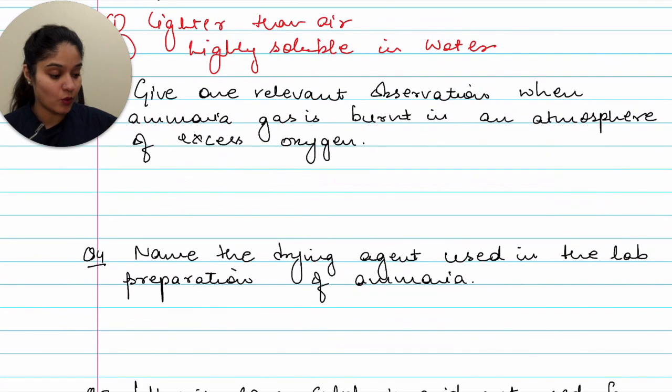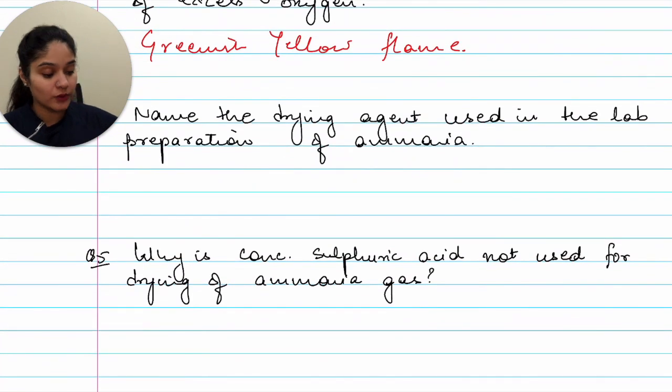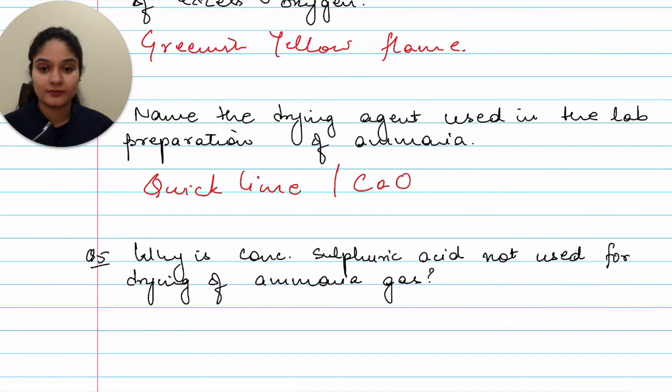Give one relevant observation when ammonia gas is burnt in an atmosphere of excess oxygen. So we get a greenish yellow flame. You have to remember the color, greenish yellow flame. Moving on to fourth question. Name the drying agent used in the lab preparation of ammonia. That would be quicklime. What is quicklime? That is CaO. You should know both the names.